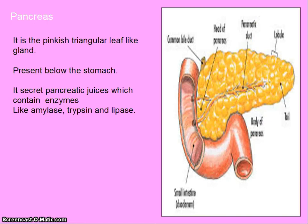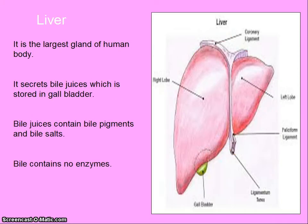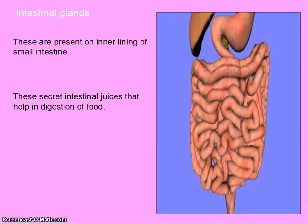Pancreas is a pinkish triangular leaf-like gland present below the stomach. It secretes pancreatic juices which contain enzymes like amylase, trypsin and lipase. Liver is the largest gland of human body. It secretes bile juice which is stored in the gallbladder. Bile juice contains bile pigments and bile salts. Bile contains no enzymes. Intestinal glands are present on the inner lining of small intestine and secrete intestinal juices that help in digestion of food.